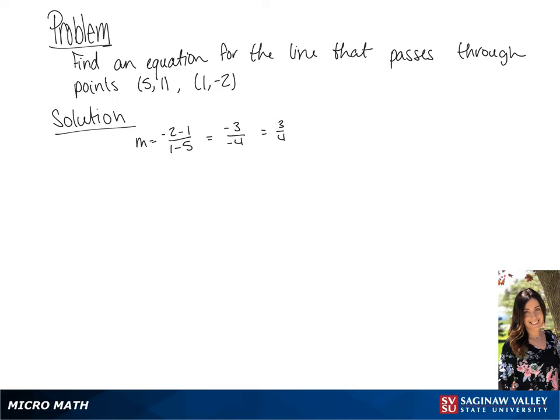Now we're going to use point-slope form with the point (5, 1). So we have y minus 1 equals 3 fourths times x minus 5. This will give us y minus 1 equals 3 fourths x minus 15 over 4.